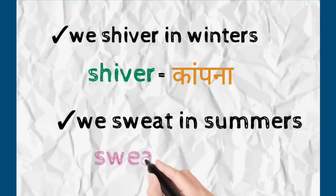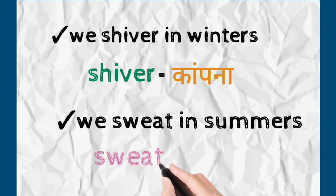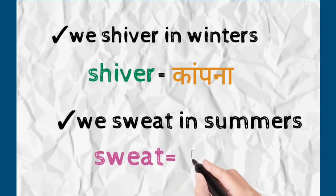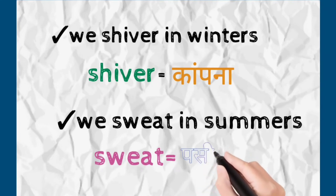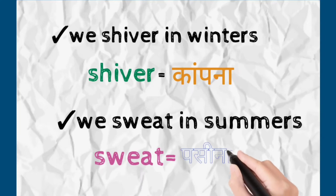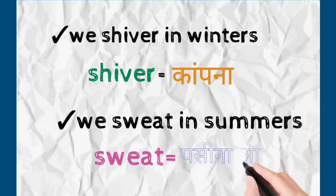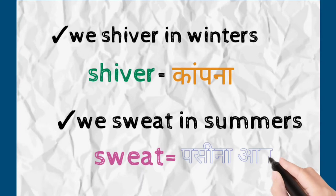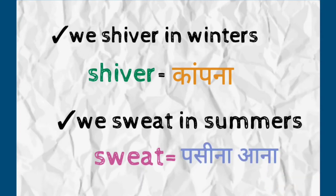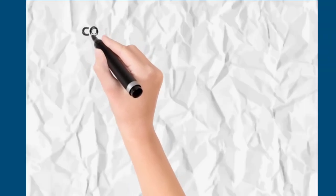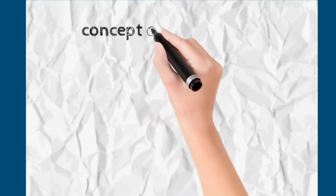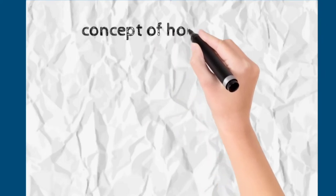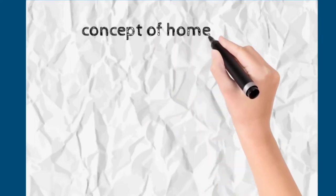Shivering and sweating are basic human phenomena — यह humans में ही present होता है. We have never seen dogs or cows sweating or shivering. So, this is basically a human phenomenon only, seen during winters and summers. To understand this concept, we will be discussing homeostasis.